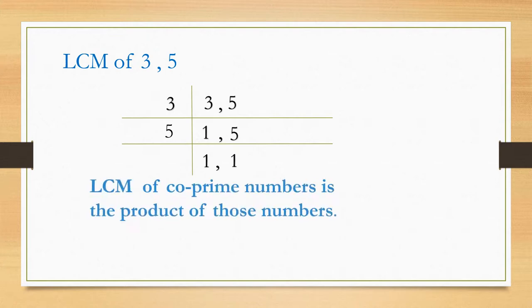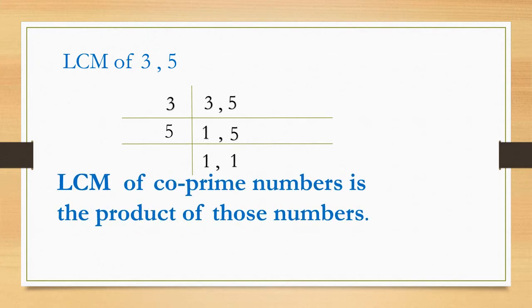Let's see, LCM of 3 and 5. As you see, LCM of co-prime numbers is the product of those numbers. 3 into 5 equals to 15.